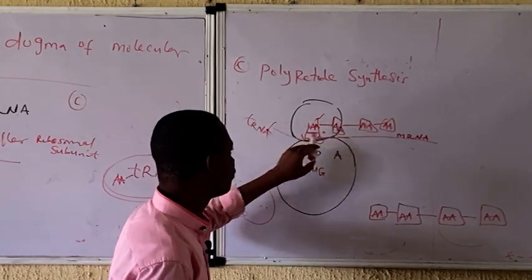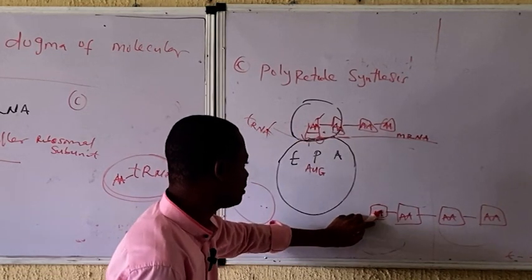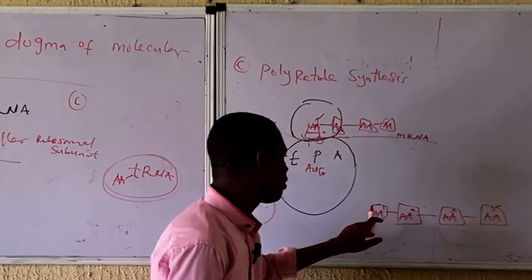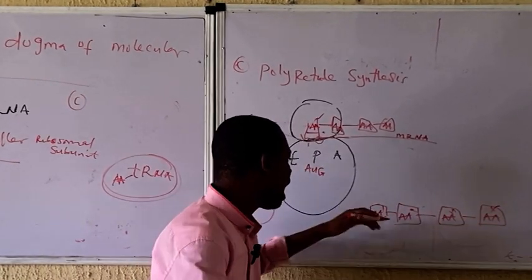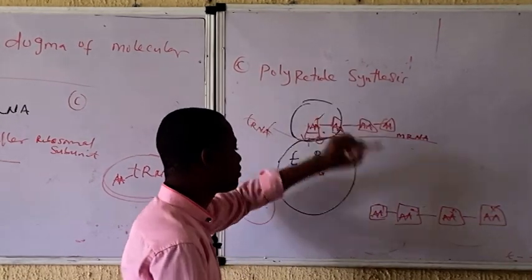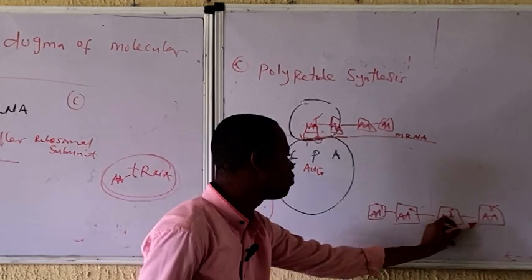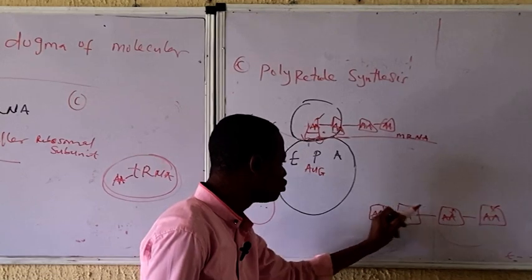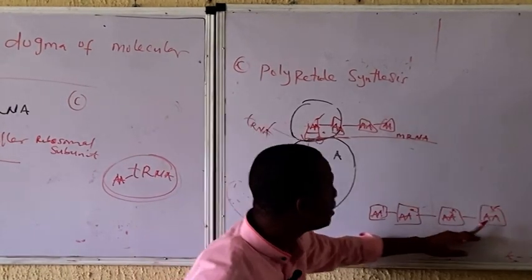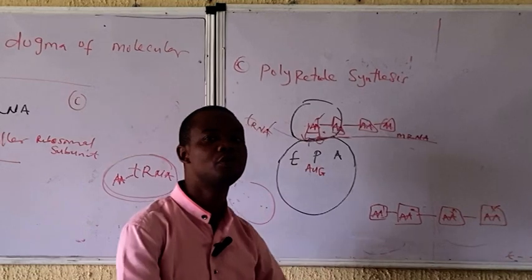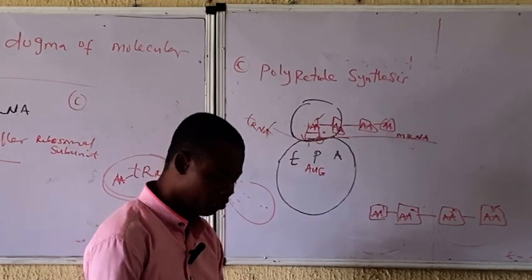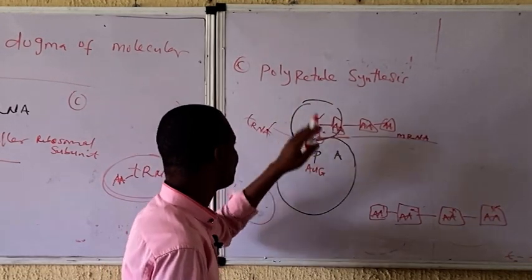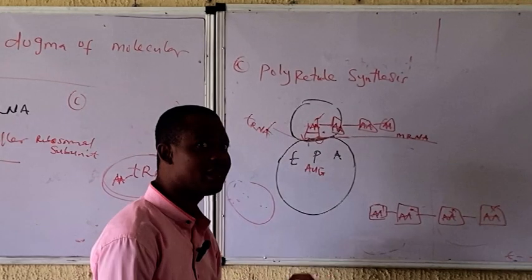After the stop codon is reached, we now have a chain: amino acid 1, amino acid 2, amino acid 3, amino acid 4, and so on. Each of the amino acids are linked together by peptide bonds. When we have many amino acids linked together, that leads to the formation of protein. Let's look at the process of polypeptide synthesis again.